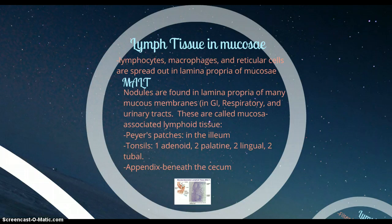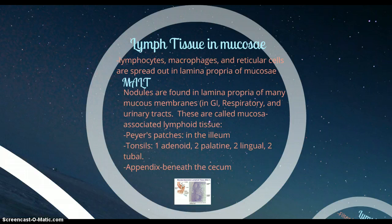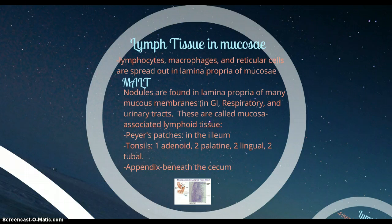There are three types of MALT. There are Peyer's patches, and those are in the ileum — just know that they're in your small intestine. Then there are tonsils: one adenoid behind your nose, two palatine tonsils on the walls of your mouth, two lingual tonsils below your tongue, and two tubular tonsils right behind your pharynx. Tonsils can swell because pathogens can make them swell, and it can become more of a problem than a helper — that's why tonsils have to be removed sometimes. And then there's your appendix, which is beneath the cecum, the first part of your large intestine.